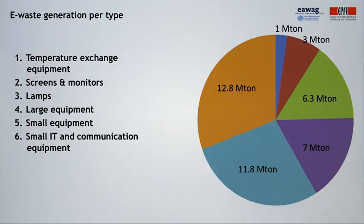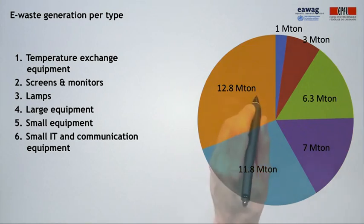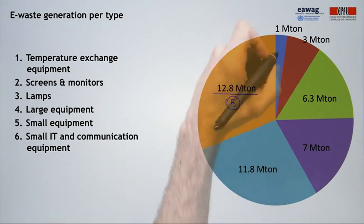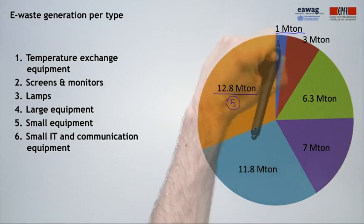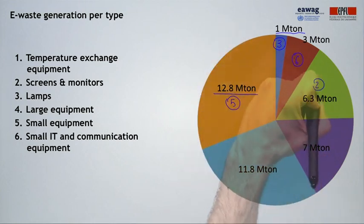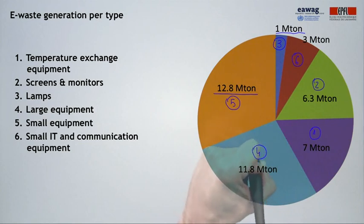I would like to ask you to match the generated amounts per year per e-waste type. Can you guess which of the e-waste types amounts to 12.8 million tons per year, or which one amounts to 1 million ton per year? 12.8 million tons of small equipment are generated per year, whereas 1 million tons of lamps are generated per year. The other e-waste types correspond to the amounts as shown with the numbers.